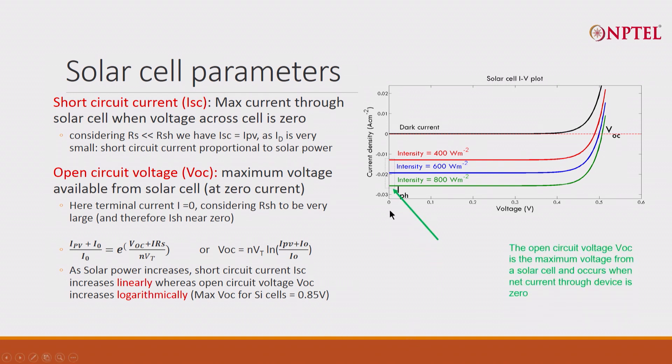So this is the open circuit voltage VOC. It is important what the voltage is. Maximum voltage from the solar cell when net current in the device is zero. When the net current is zero, well, net current is zero. This is the open circuit.